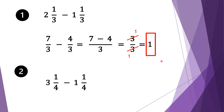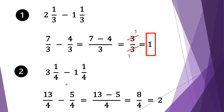Moving on to question two, we have three and one quarter minus one and one quarter. Again we convert our mixed fractions into normal fractions: four times three is twelve, plus one is thirteen, and we bring our denominator four down. We do the same for the second fraction: four times one is four, plus one is five, and we bring our denominator down as well.